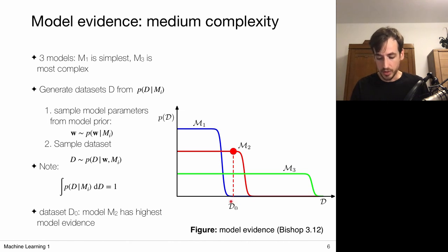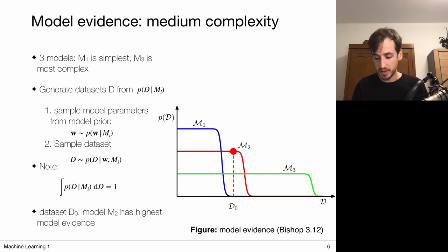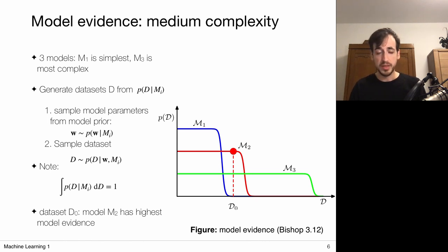Now we observe some data set and want to recover which model might have been the source. Model one is very unlikely to be the source because the model evidence is almost zero — it simply cannot represent such a data set. And for the complex model, surely it can represent the data set, but the model evidence is lower than that of the medium model — because what are the odds this data came from among all the many options the complex model can generate? So the model that is just complex enough to describe the data set will have maximal model evidence, as it is normalized over all possible data sets it can represent. Therefore the model of just-right complexity will have the highest model evidence.